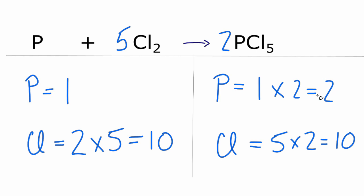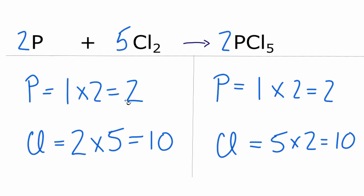For the phosphorus, we need two, and we only have one. We put a two in front of the phosphorus — one times two gives us two phosphorus atoms — and we've balanced the equation.